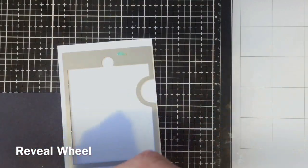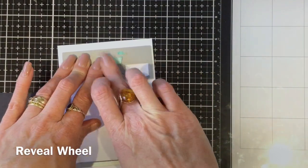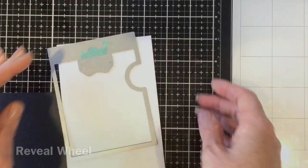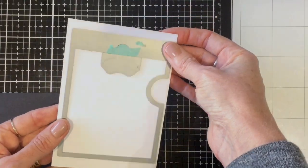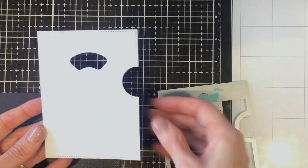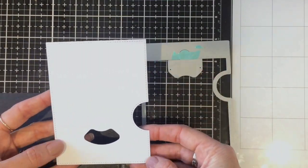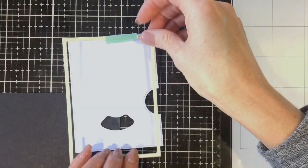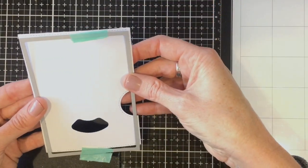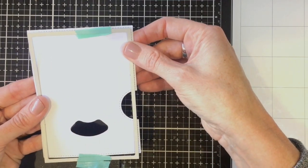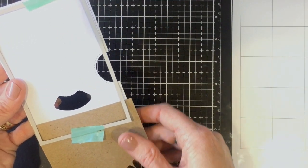So I've started by cutting out my reveal wheel main part from a white piece of card. I'm just going to run that through my big shot. And I actually want my reveal wheel gap to be at the bottom, so I just flipped it over. Of course this means that your stitching is on the wrong side, so I just got one of my stitched rectangle dies and I've laid that over the top and run it through my big shot again so that I get a stitched rectangle, the stitching on the right side.